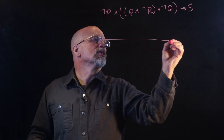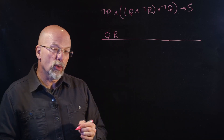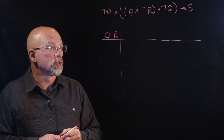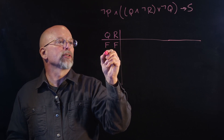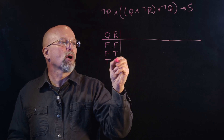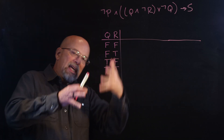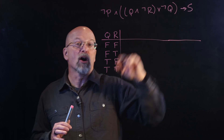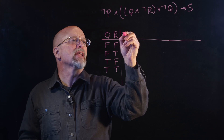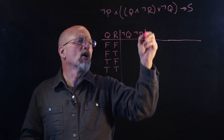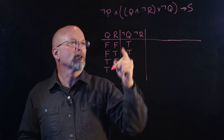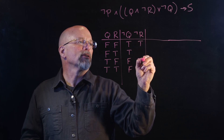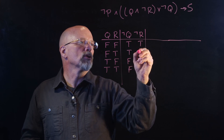I'm going to make a truth table. I have two propositions: Q and R. In Q and R there are four possible ways they can be set — two propositions, two to the two, four ways we can assign trues and falses. We have false-false, Q false and R true, Q true and R false, and both true. Both Q and R are going to require their negation. So let's figure out ¬Q and ¬R. Everywhere Q is false, ¬Q is true; everywhere Q is true, ¬Q is false. Similarly for R: everywhere R is false, ¬R is true; everywhere R is true, ¬R is false.